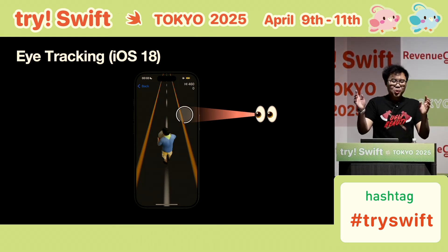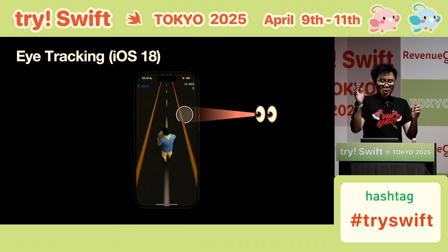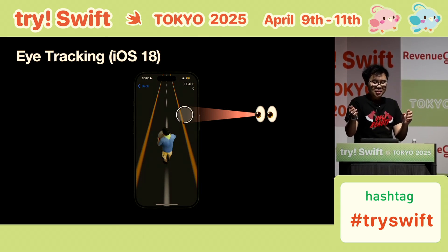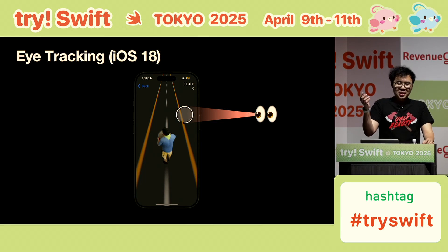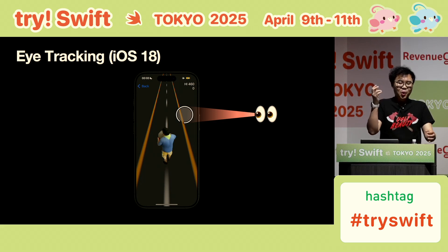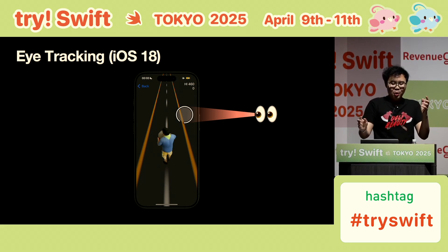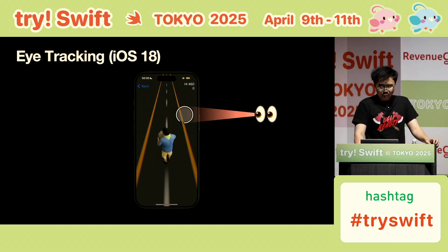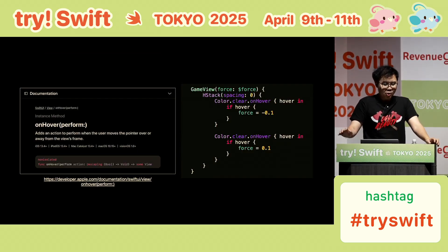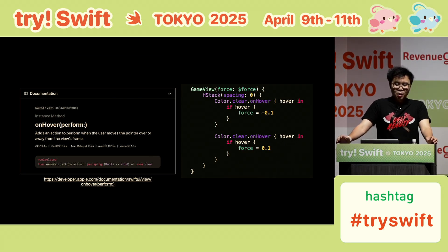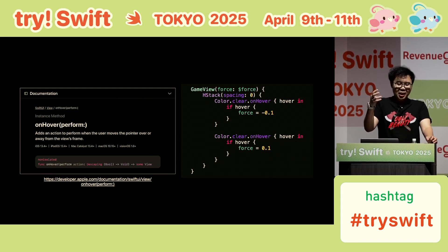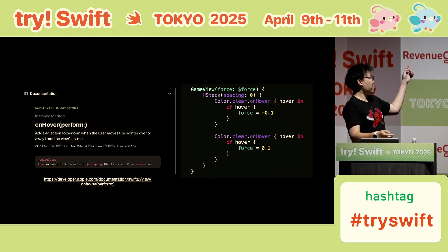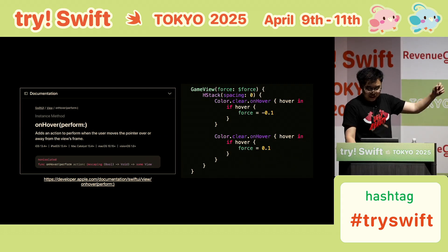And one more thing — eye tracking. This is a new feature on iOS 18 and also one of the accessibility features. When you connect a mouse to your device, you can use it to focus on a view or even perform an action. The most simple way is the onHover modifier. When your mouse hovers over a view, the closure will be called. We read the document, write the code, and take a look.